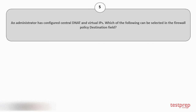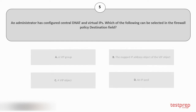Question number 5. An administrator has configured central NAT and virtual IPs. Which of the following can be selected in the firewall policy destination field? Your options are: A) a VIP group; B) the mapped IP address object of the VIP object; C) a VIP object; D) an IP pool.